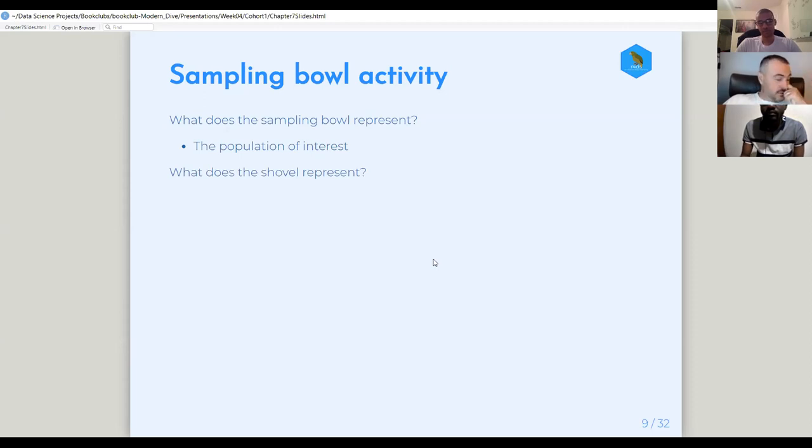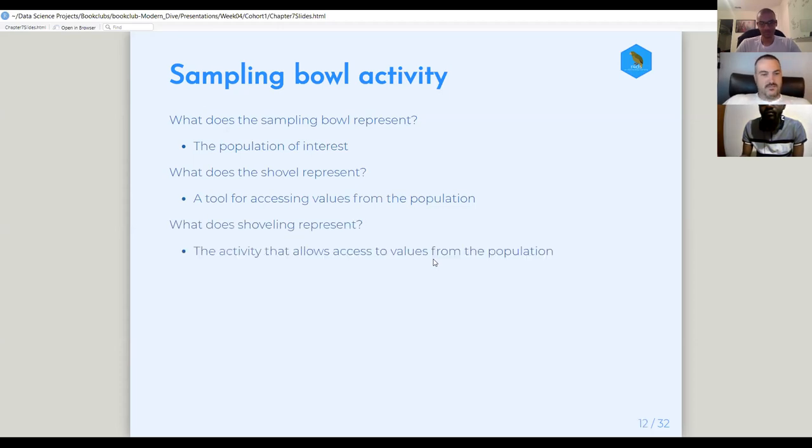And then the shovel. What does the shovel represent? That's like our means of sampling. It's how we can actually get the sampling done. So it's a tool for accessing values from the population. That's what the shovel was. And then what does shoveling represent? All right. So there's shoveling involved. And that's the activity that allows us to access values. So these are very concrete analogies to a very broad way that you can think. The sampling bowl, the population of interest, isn't just a sampling bowl. It can be the people in the country, we want to poll them to see what their preferences are, we want to survey some participants. It can be a lot of different things. But there's that concept there. So I think that's a very concrete way of introducing everything.